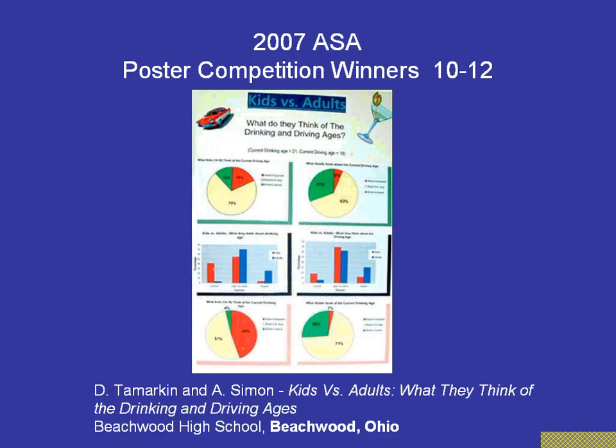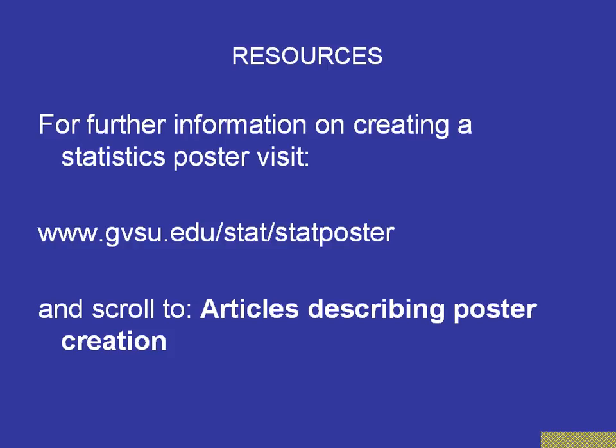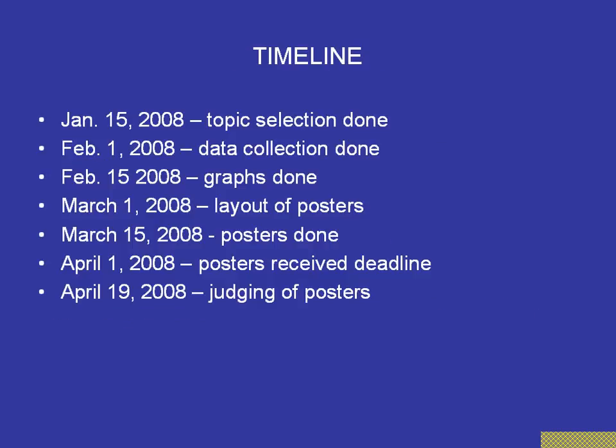The last few slides deal with some resources for you to avail yourselves of. The first one is the Michigan Statistics Poster Competition website — if you go to that website, you'll see a link that says Articles Describing Poster Creation. Neil and I wrote a series of articles that deal with pretty much what we talked about today but in a little more detail. If the state has its own competition, like Michigan, the posters are sent to the state competition, judged at the state level, and then the best posters are sent on to the national competition. If you're in a state that doesn't have its own competition, you would send them all directly to the national competition. This is a timeline that teachers in Michigan have found allows them to get everything done without rushing too much.